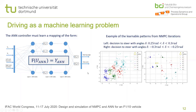To illustrate what this mapping looks like, we have two situations depicted on the right. First, all the points where the NMPC controller decided to steer the car with an angle delta of 0.25 to 0.3 radians — you can see that this clearly forms a left turn. This is one of the patterns that the ANN can very easily learn.